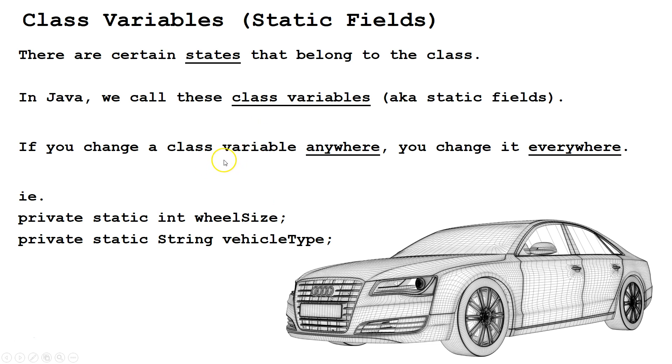Understand, if you change a class variable anywhere, you change it everywhere. So if we change the wheel size anywhere in any instance or the class itself, it'll change all instances. If we change the wheel size in one place, since the wheel size belongs to the class, it changes it everywhere. Same thing with vehicle type. We change it one place, it gets changed everywhere.